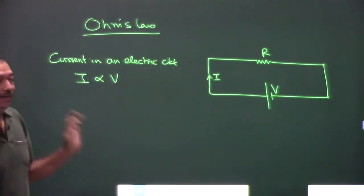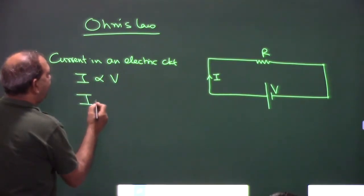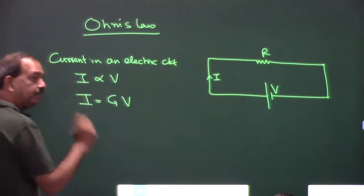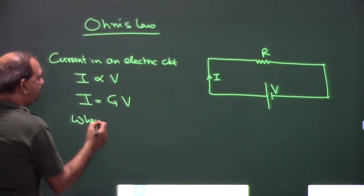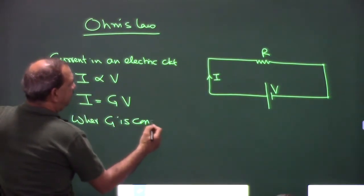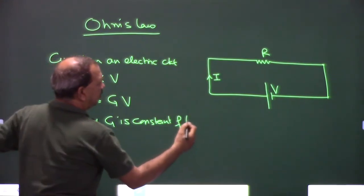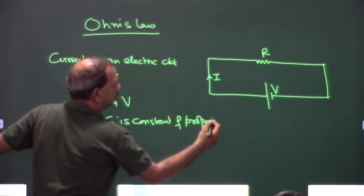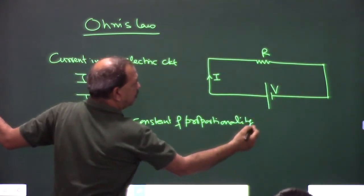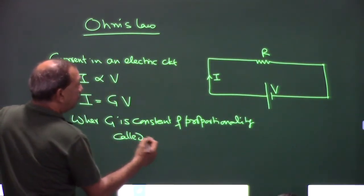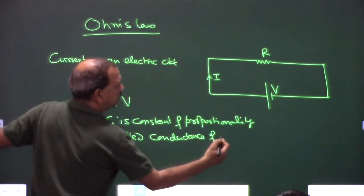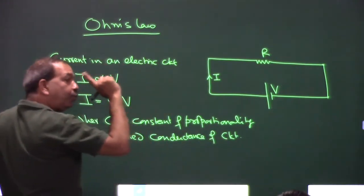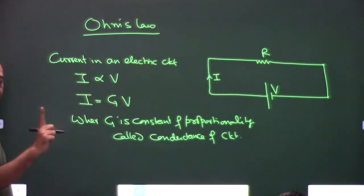When we include the proportionality constant, I = GV, where G is the conductance of the complete circuit. Separately, the potential difference across a resistor: V is proportional to I, and V = IR, where R is the constant of proportionality called the resistance of the resistor.